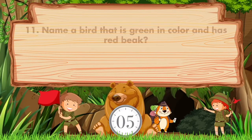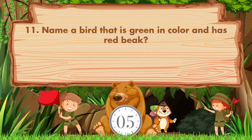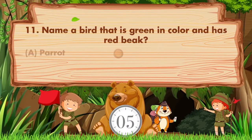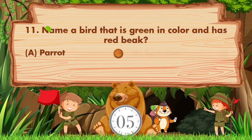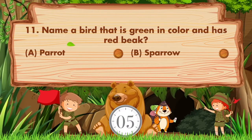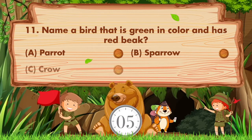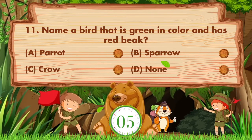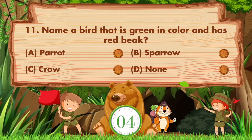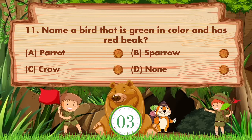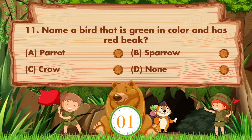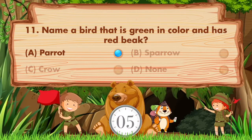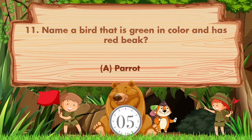Name a bird that is green in color and has a red beak. Option A: parrot, B: sparrow, C: crow, D: none. Answer is option A, parrot.